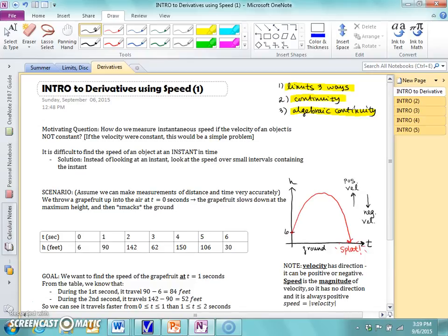Our motivating question here is how do we measure instantaneous speed, that's the key here, instantaneous speed, if the velocity of an object is not constant?